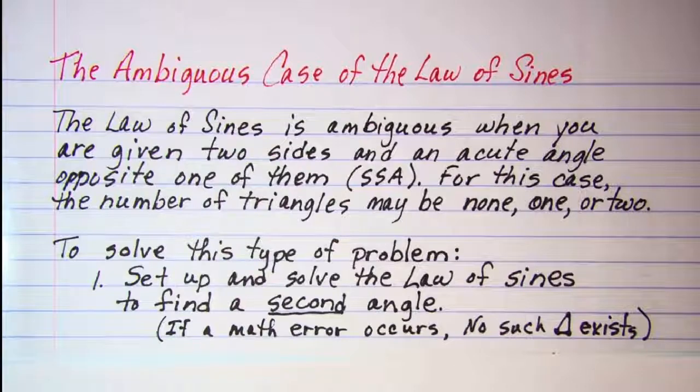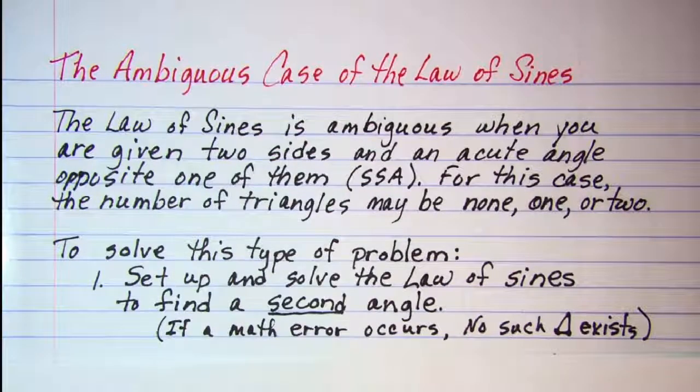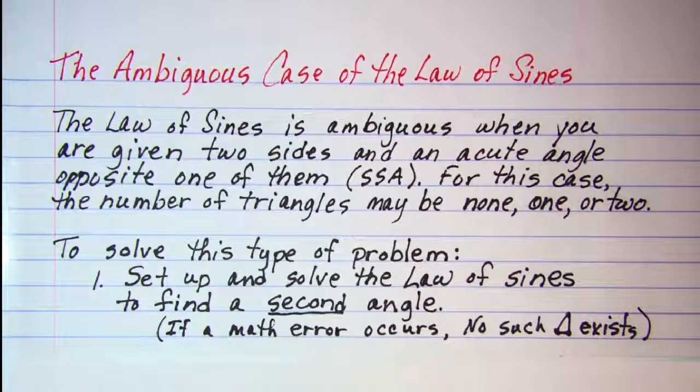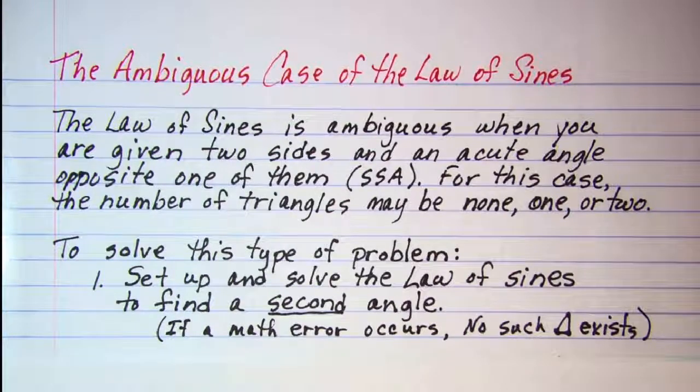To solve this type of triangle, set up your Law of Sines and solve it to find your second angle. If a math error occurs, then no such triangle occurs.